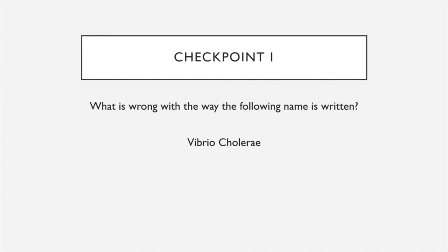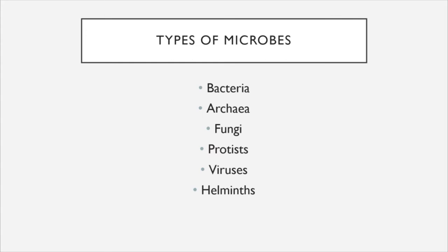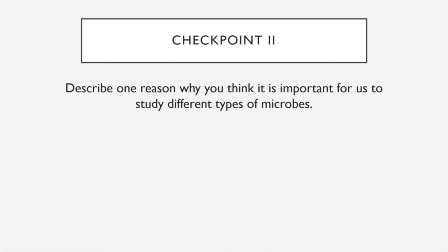Once you've written down your answer for this checkpoint, we're going to move on. If you need more time, feel free to pause the lecture. Next we are going to take a look at the different types and categories of microbes in our course. We have six categories: bacteria, archaea, fungi, protists, viruses, and helminths. Before we get started, I want you to brainstorm one reason why you believe it is important for us to study these different types of microbes.